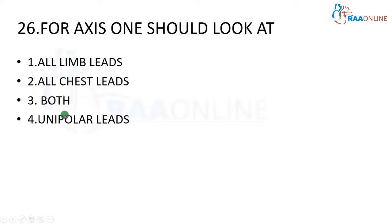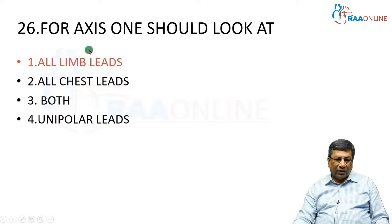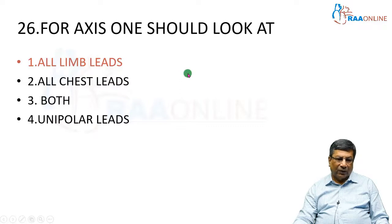All limb leads and all chest leads are both unipolar leads. So you have to look at all the limb leads. For axis, you need not look at the chest leads at all. You have to look at only the six limb leads — three bipolar leads and three unipolar leads.